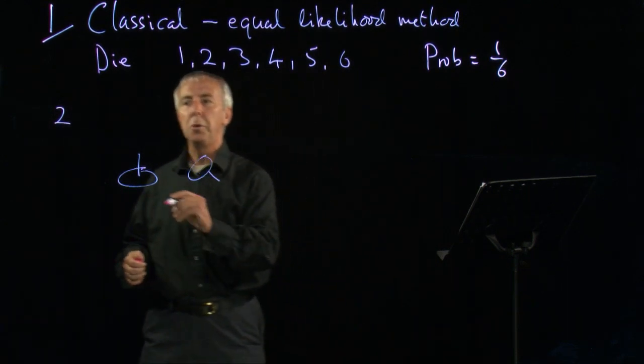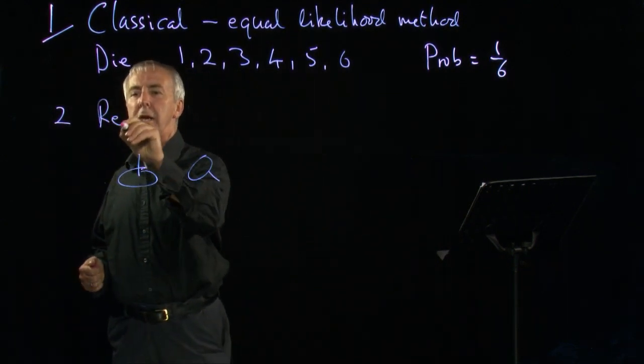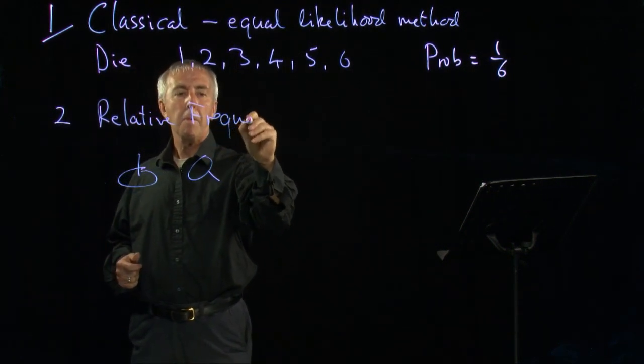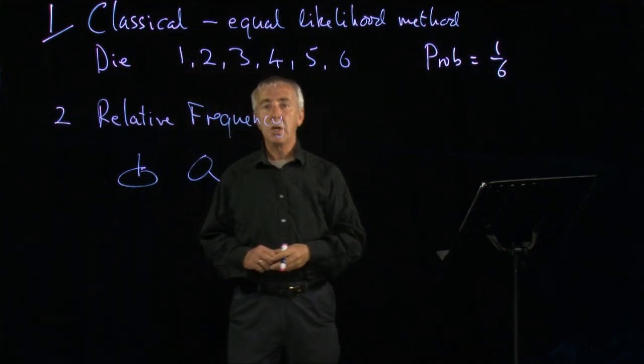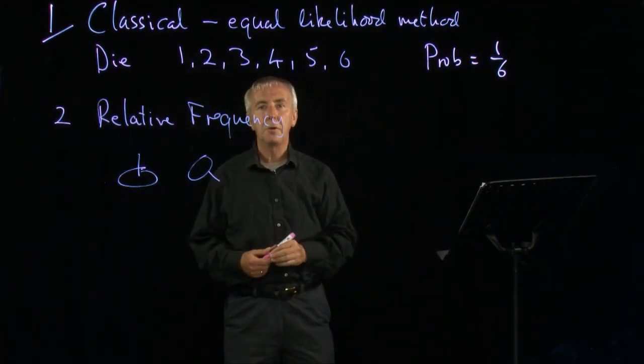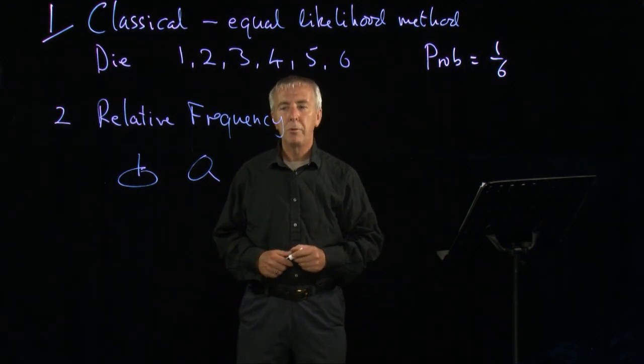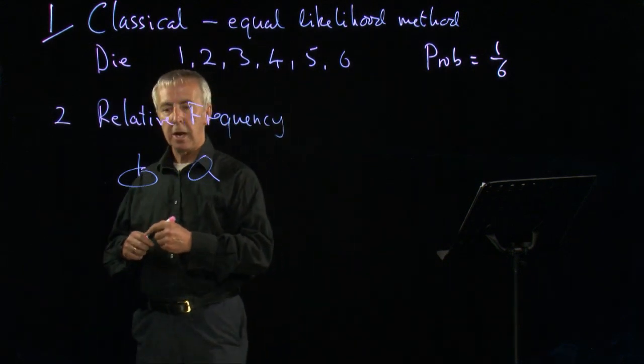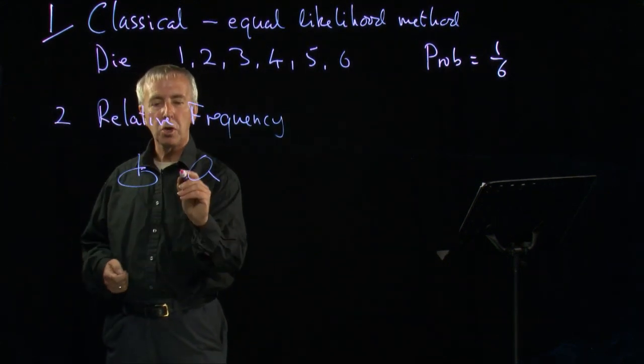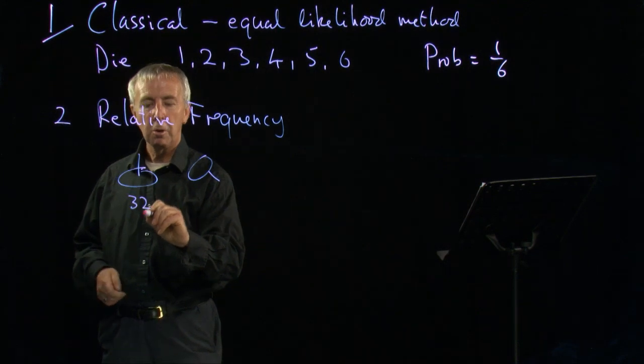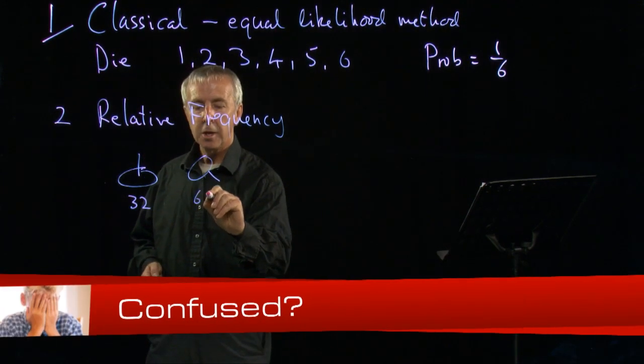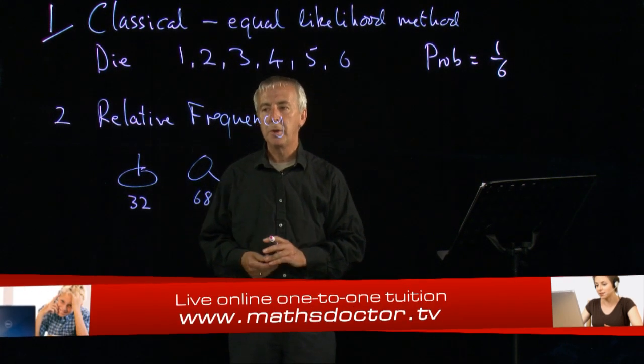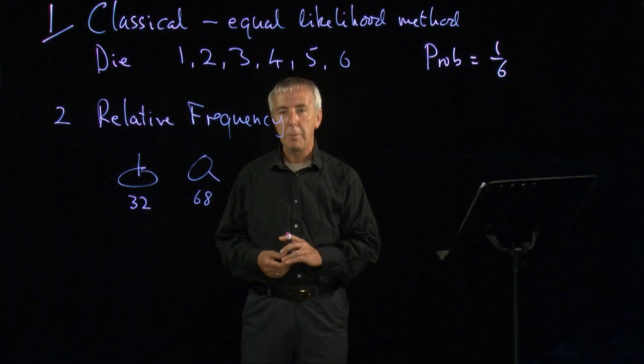So what we have to do in this case is what's called the relative frequency definition. We actually just do the experiment lots and lots of times. We toss this drawing pin a number of times, and we find out what fraction of times it lands pins up. So suppose we did 100 tosses of this, and we might get 32 of those and 68 of those. So out of the 100 times, the fraction of times that the pin has landed point up is 32.